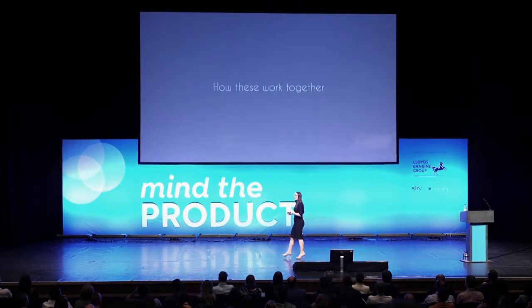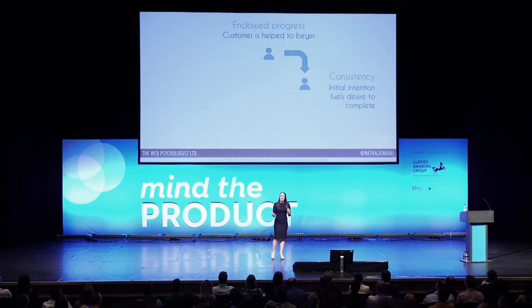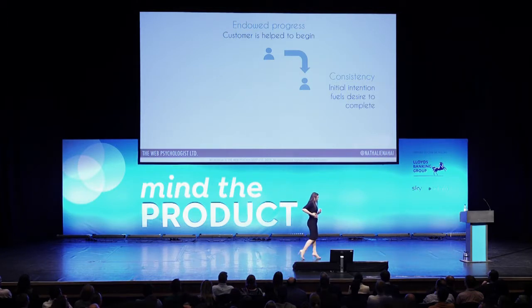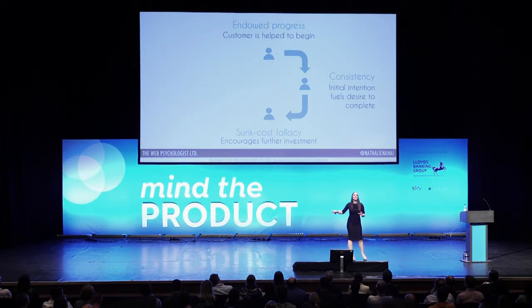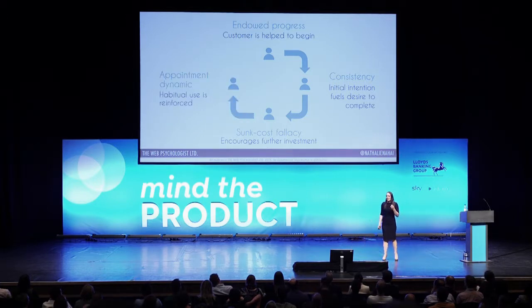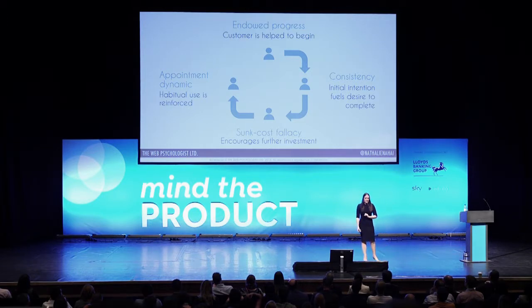Let me talk briefly about how these work together. First, endowed progress: you help customers begin, giving them artificial advancement towards a goal. Once they're engaged, the consistency principle kicks in and they're more likely to follow through to complete that goal. By that point, the consistency has got them to come back — to spend time, money, and effort. They've already sunk that cost, which encourages further investment because they don't want to lose what they've already invested. Then you give them a reason to come back: the appointment dynamic creates habitual use through reinforcement.